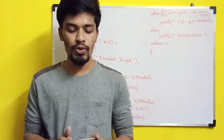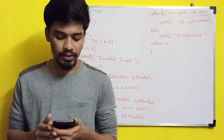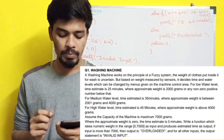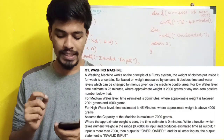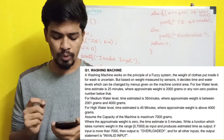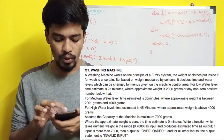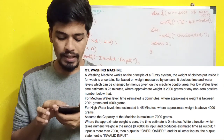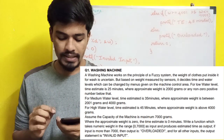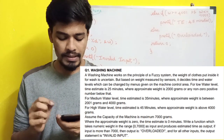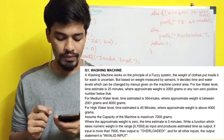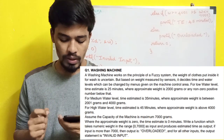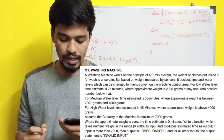So the first question is the washing machine. A washing machine works on the principle of a fuzzy system. The weight of clothes put inside it for washing is uncertain, but based on the weight measured by a sensor, it decides the time and water levels, which can be changed by menus given on the machine control area.